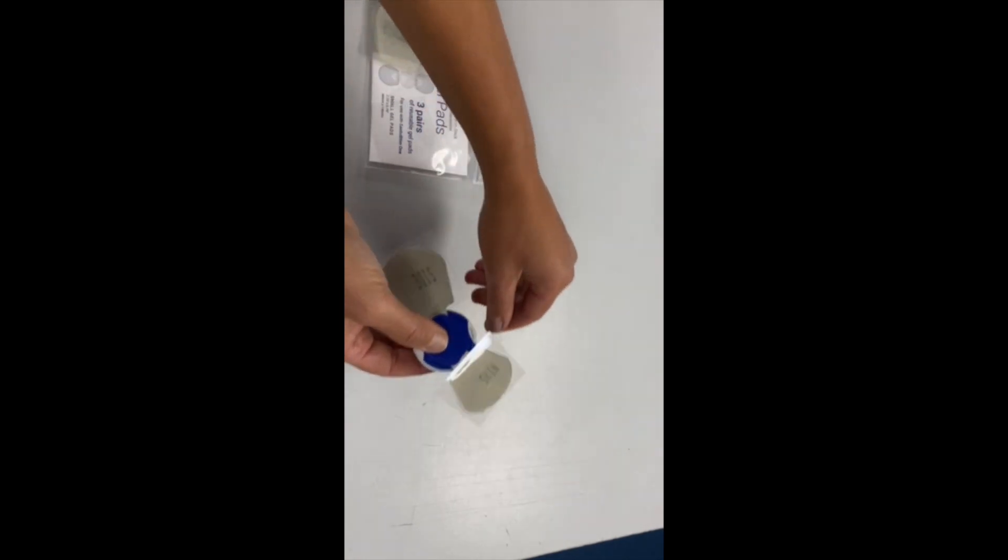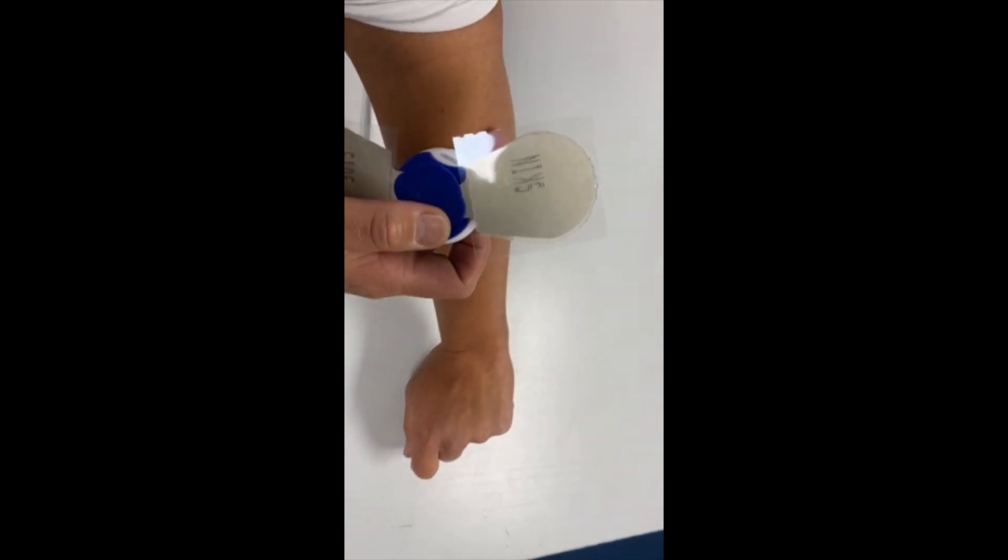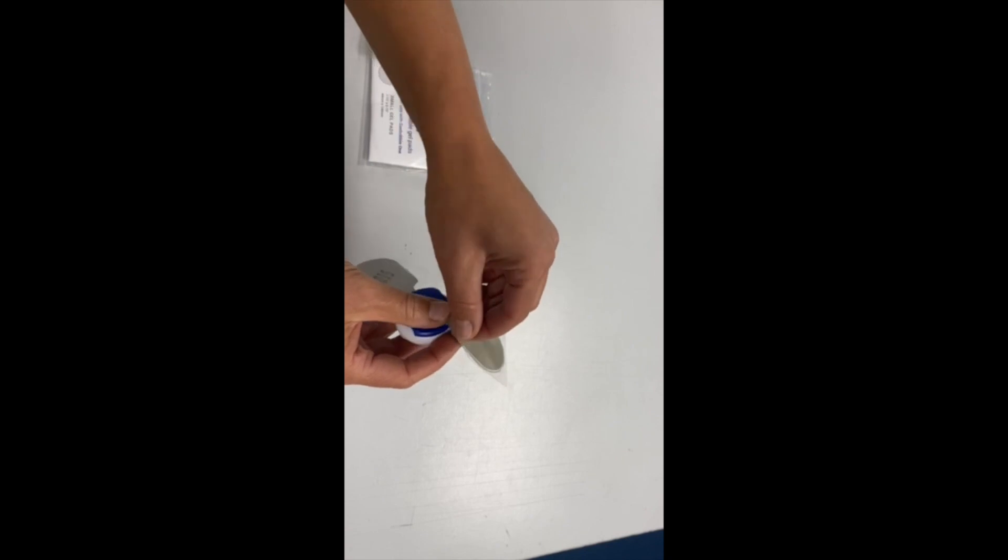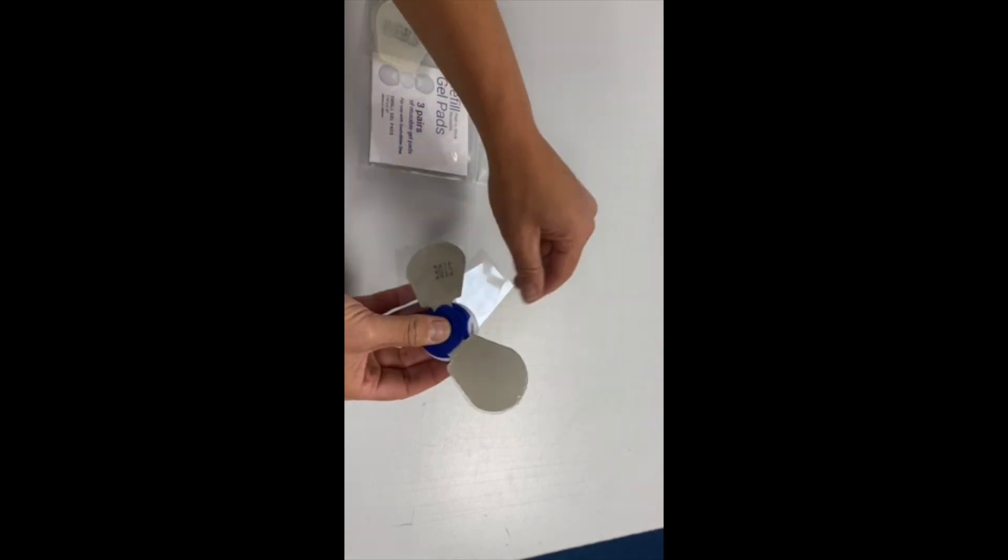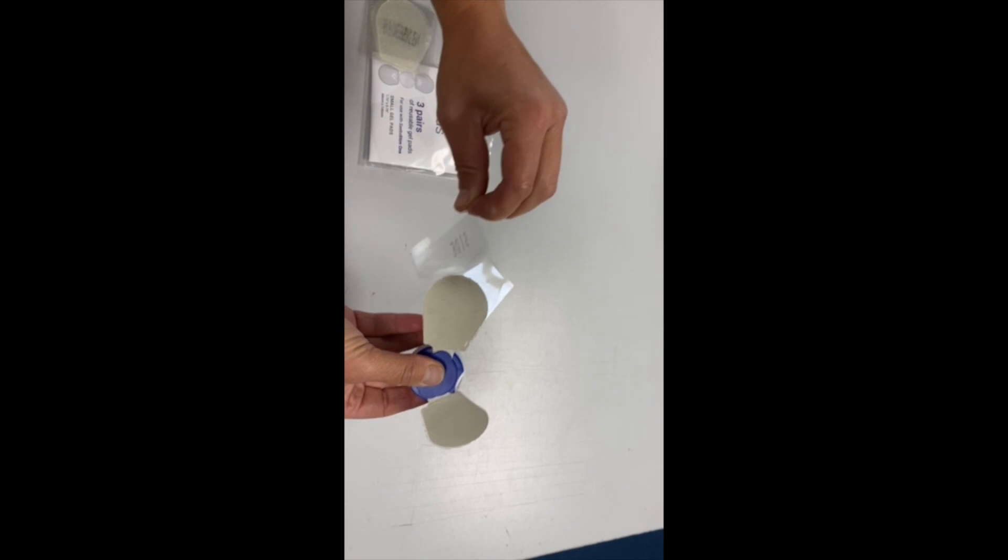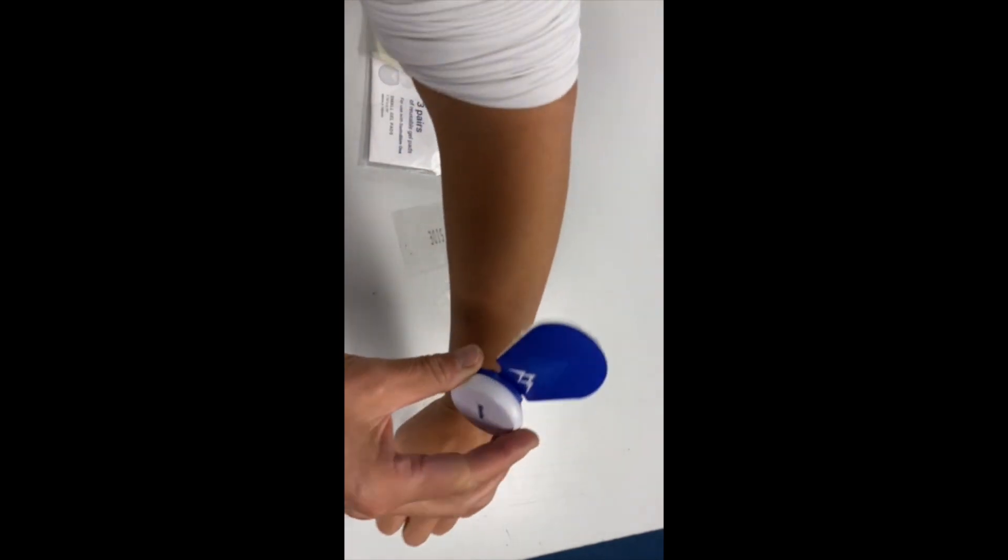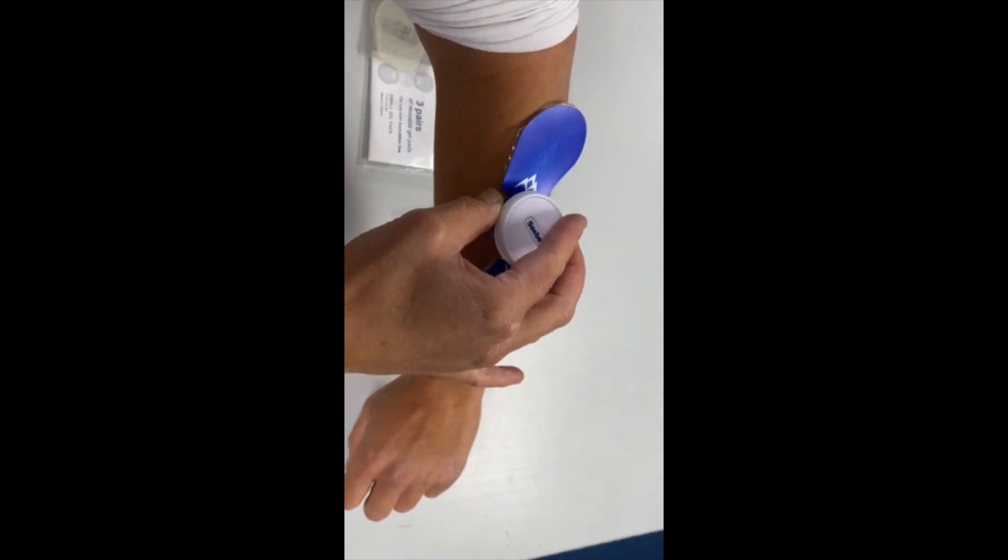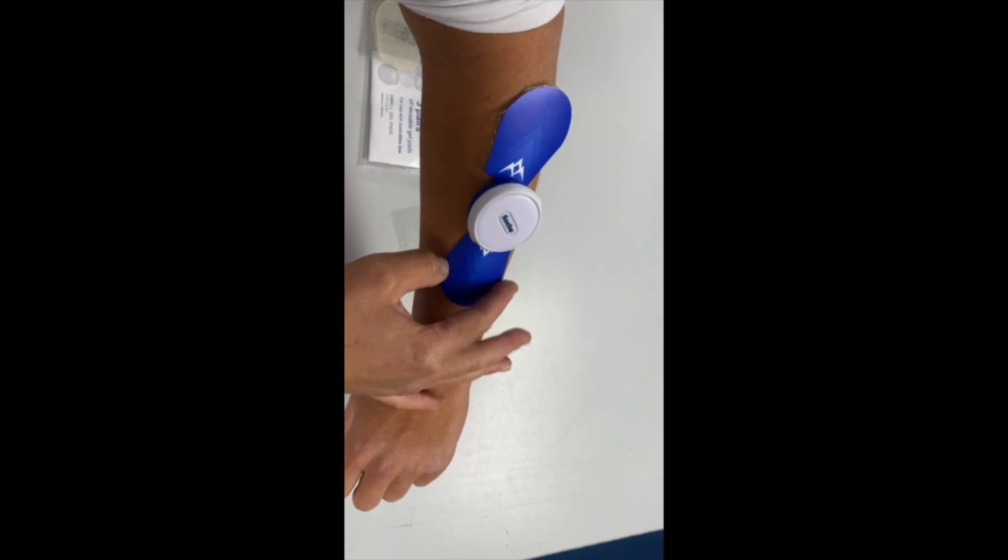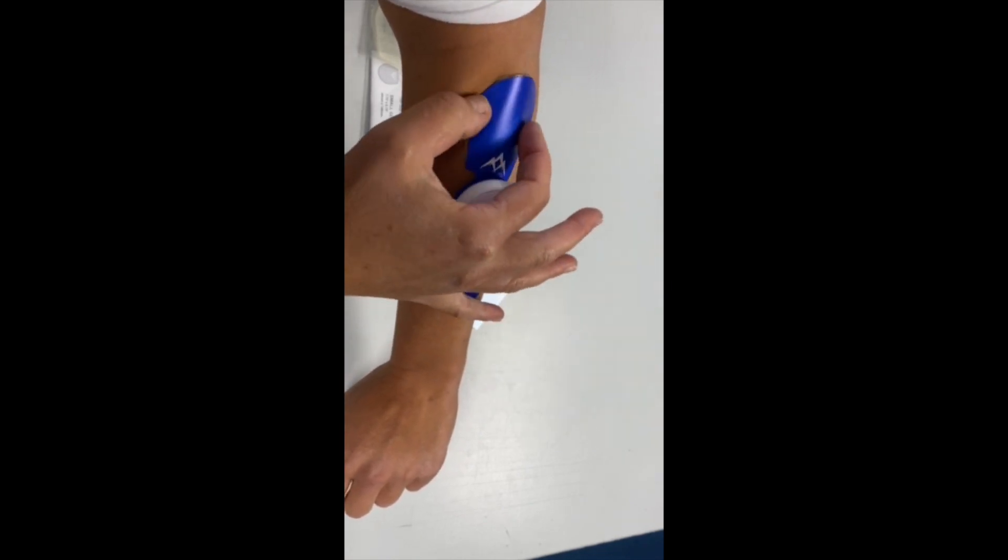You can use this on any muscle. I'm going to use it on my forearm, wrist, and finger extensors. Remove the final piece of clear plastic backing and place it on your arm. You can find examples of where to place it for different movements in the back of the manual.